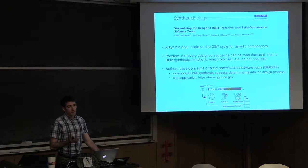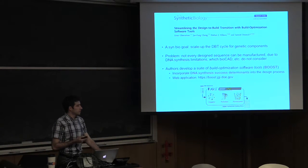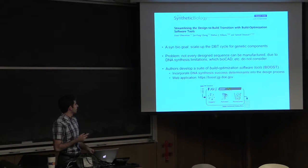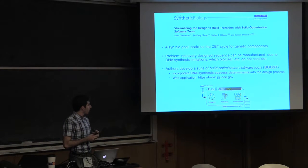All right. So the general design-build-test cycle of synthetic biology involves trying to go through this cycle in a way that can be scaled up without making mistakes. And so one problem that anyone who has ordered a gene before from a synthesis company recognizes is that not every sequence that you design can be manufactured.